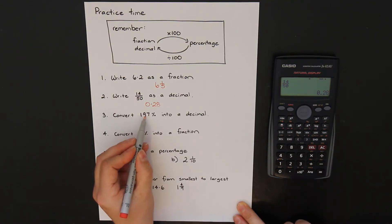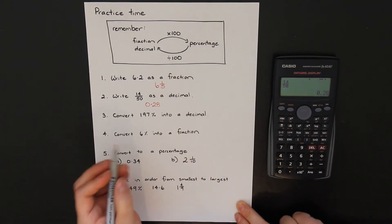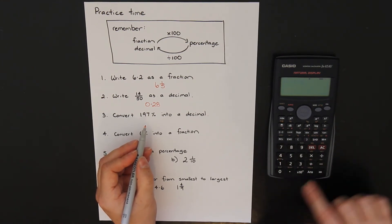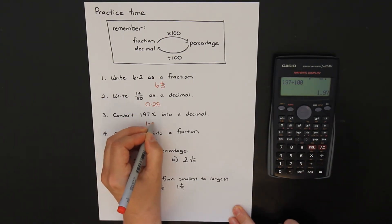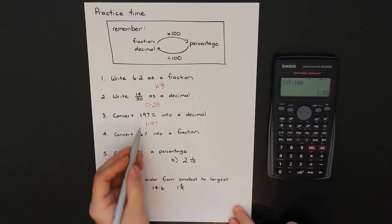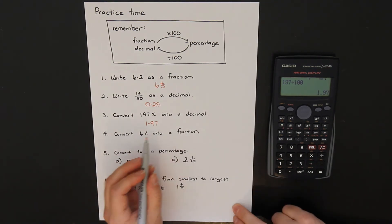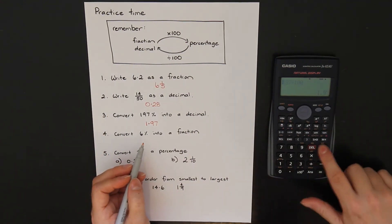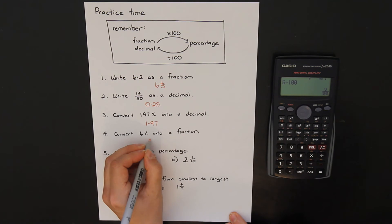Convert 197% to a decimal: percentage to decimal means divide by 100. Type 197 divided by 100 — that gives 1.97. Question 4: convert 6% into a fraction. I still want to divide by 100, but I want my answer as a fraction. So 6 divided by 100 equals, and the calculator simplified it to 3 over 50.